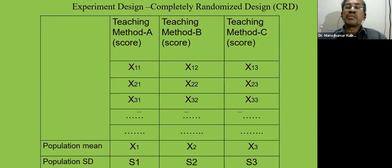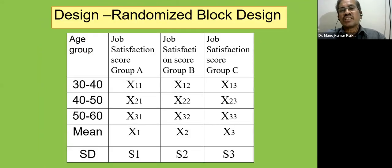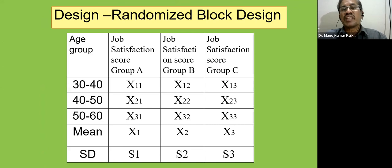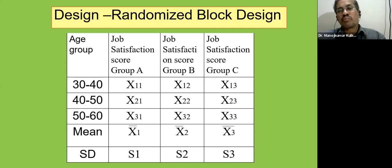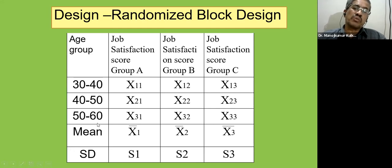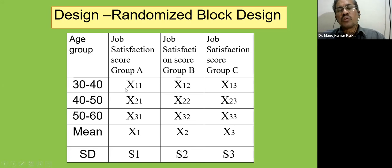In a randomized block design, suppose we are comparing job satisfaction in three companies A, B, and C, where satisfaction scores vary by age group. We select 60 employees from each company and divide each into three age groups: 30–40, 40–50, and 50–60, taking 20 from each group — totaling 60 per company. We measure the mean score and compare whether there is a significant difference. This design is called randomized block design.